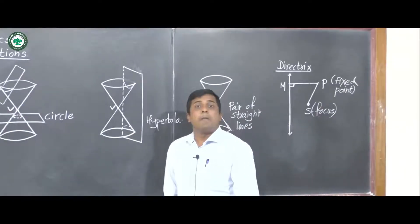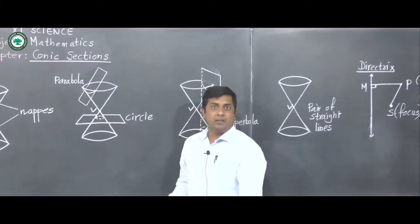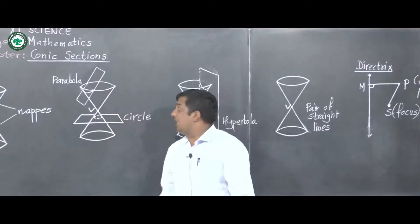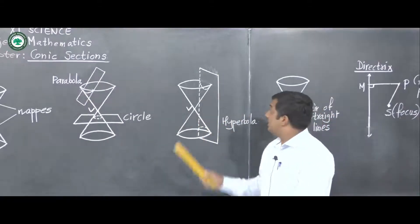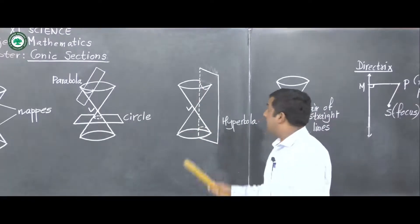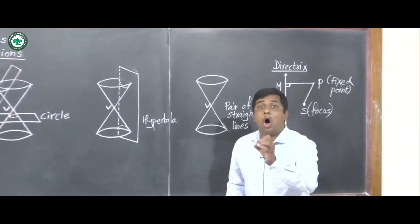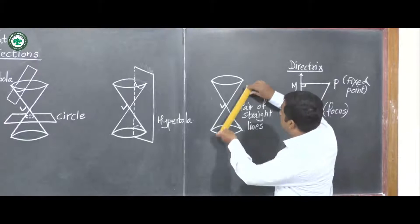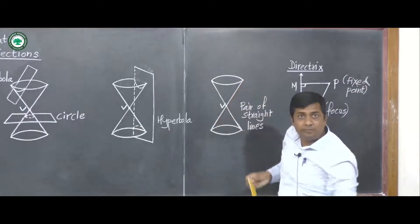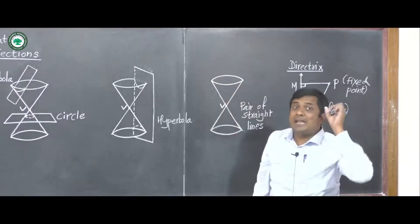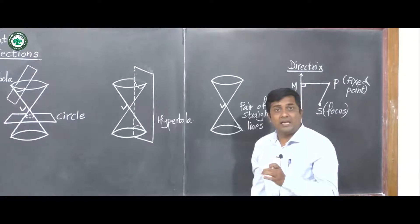To summarize: if the plane is perpendicular to the axis we get a circle; if the plane is parallel to the generator we get a parabola; if the plane is parallel to the axis we get a hyperbola. Also, if the plane passes through the generator itself, the section gives a pair of straight lines.